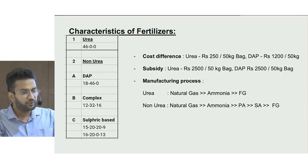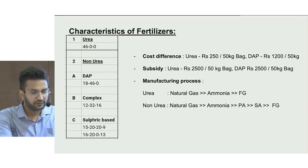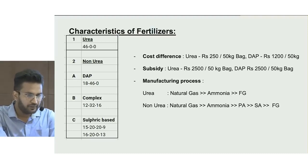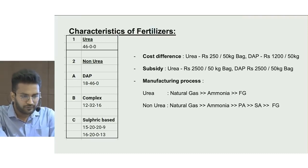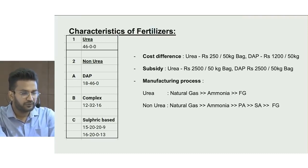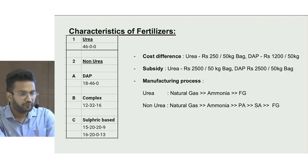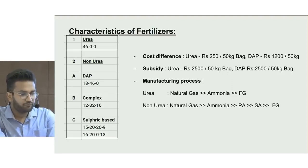As far as the manufacturing process is concerned, urea is simpler — nitrogen is mixed with hydrogen from natural gas to create ammonia and arrive at the final product of urea. Whereas in non-urea production, two more chemical elements are needed: phosphoric acid and sulfuric acid.